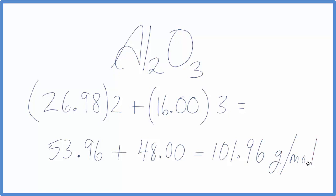Which is often just written g/mol. And that's the molar mass, or molecular weight, for Al2O3, aluminum oxide.